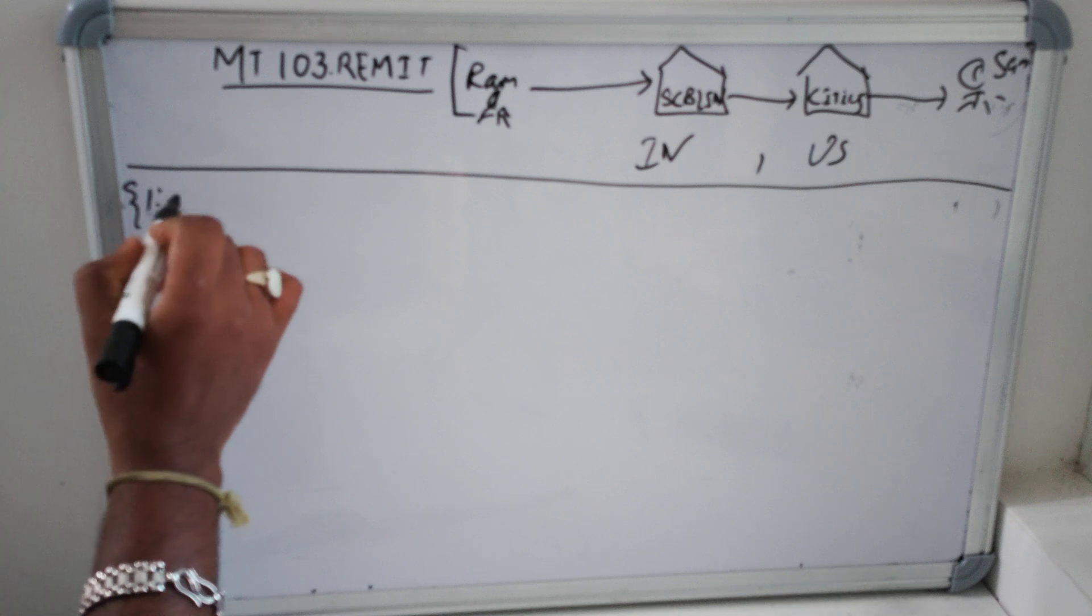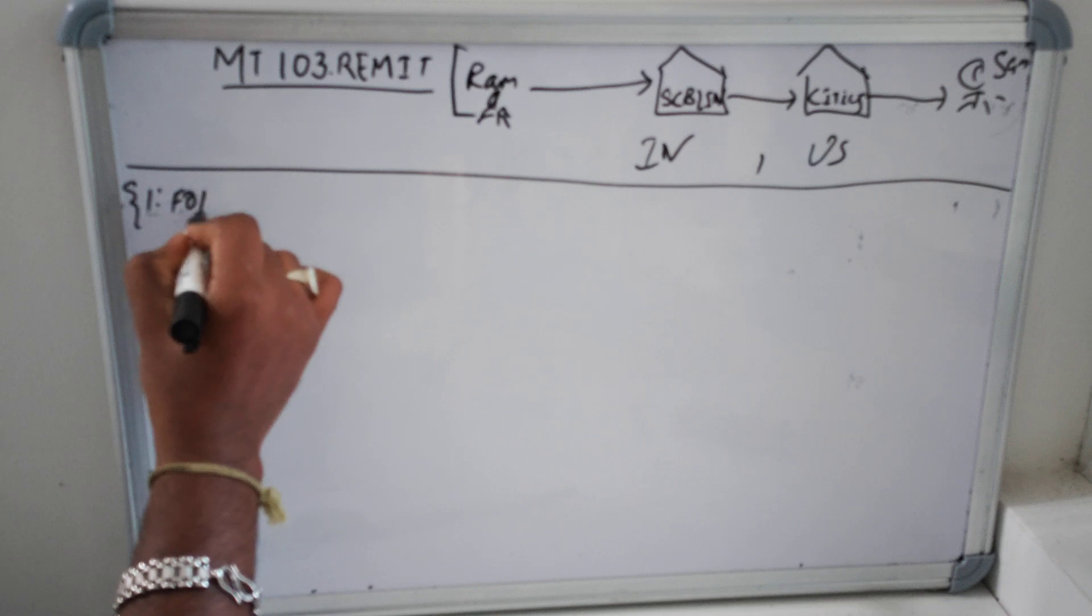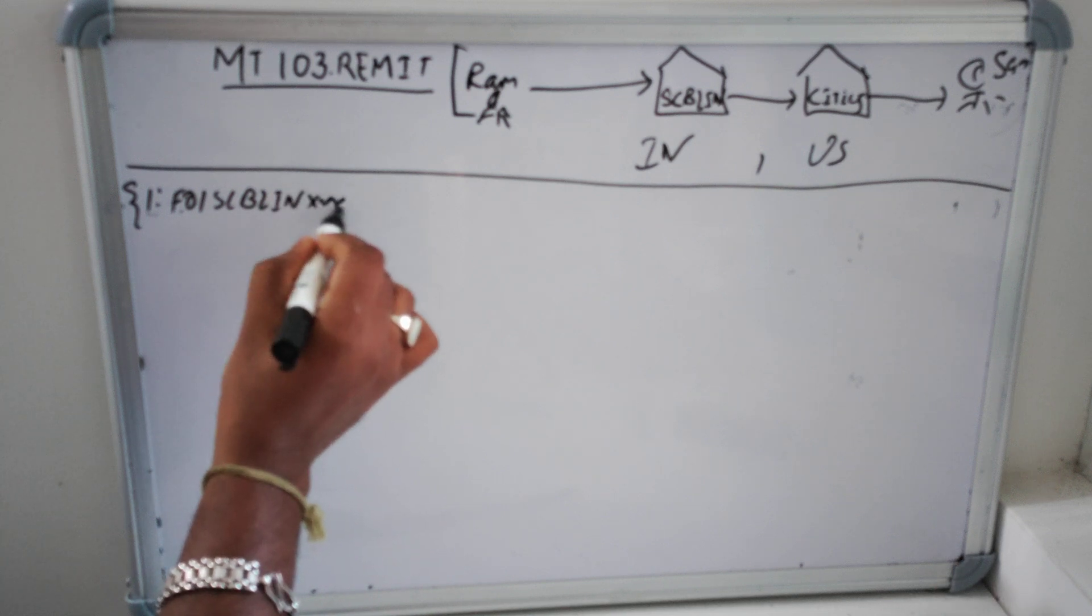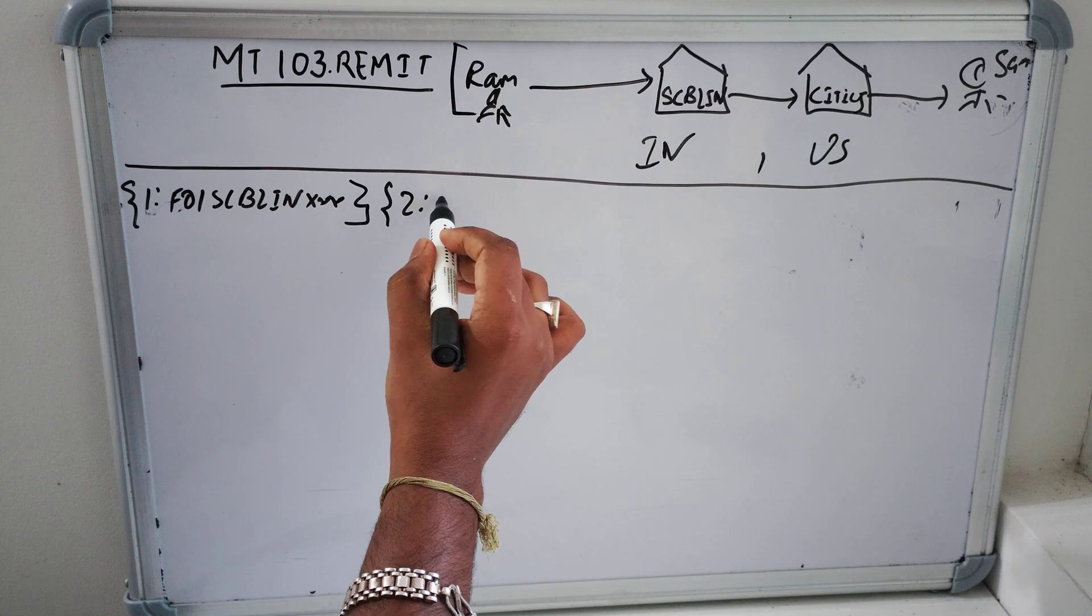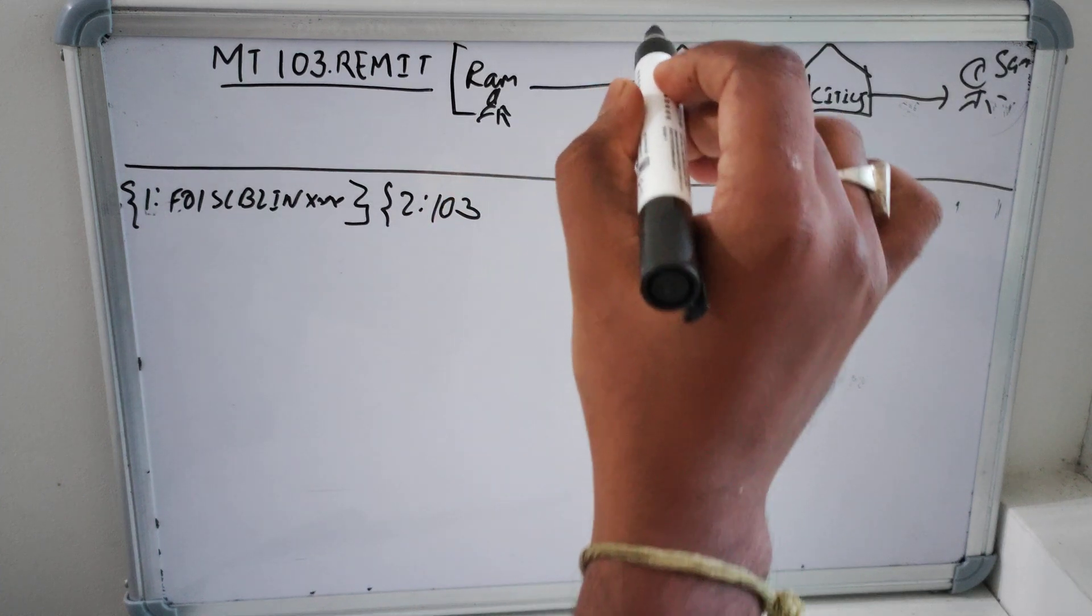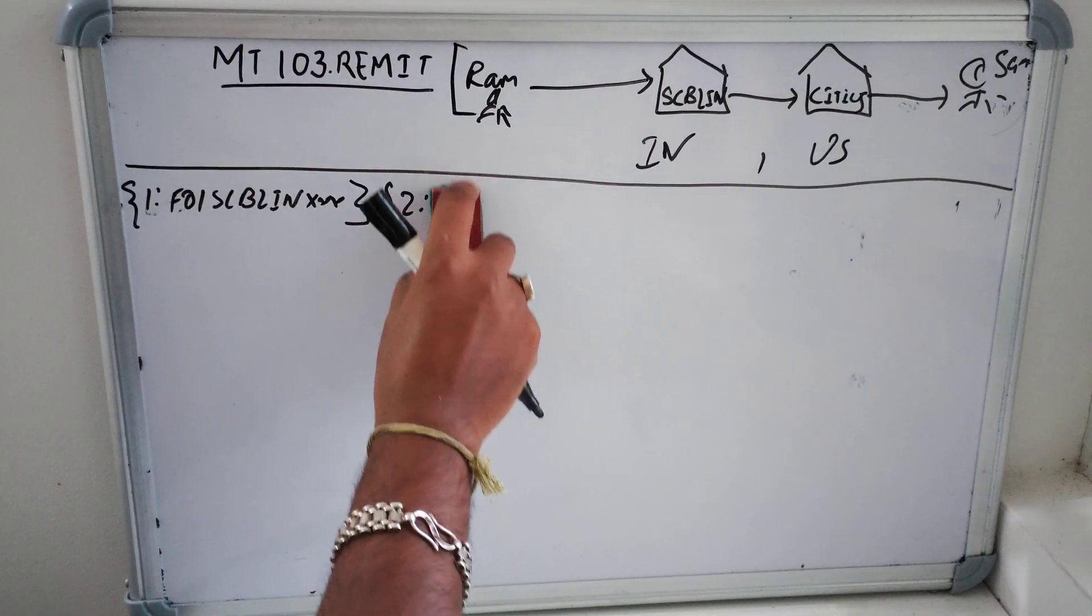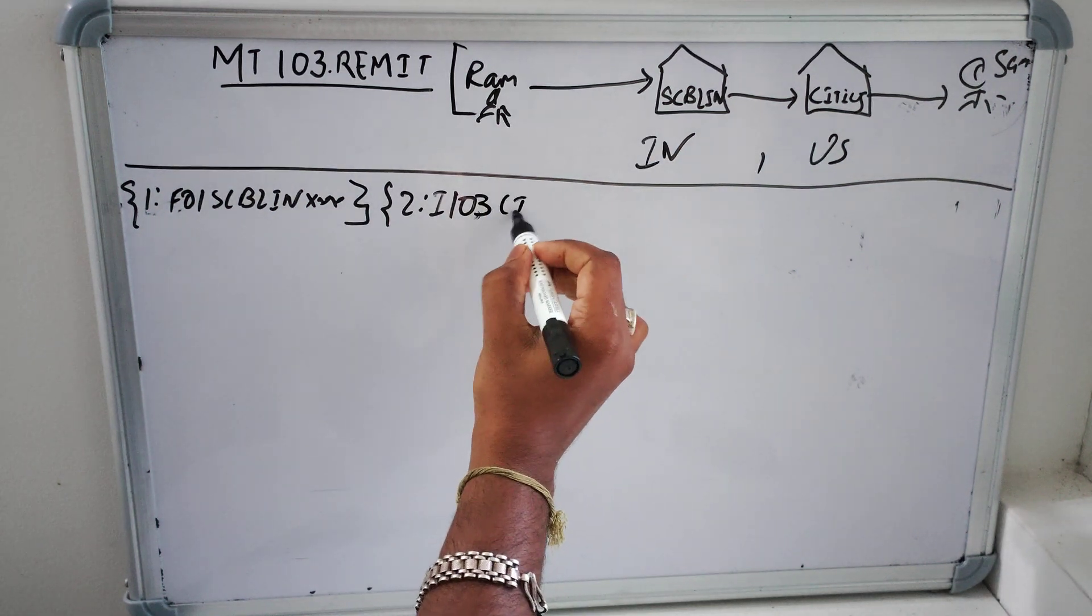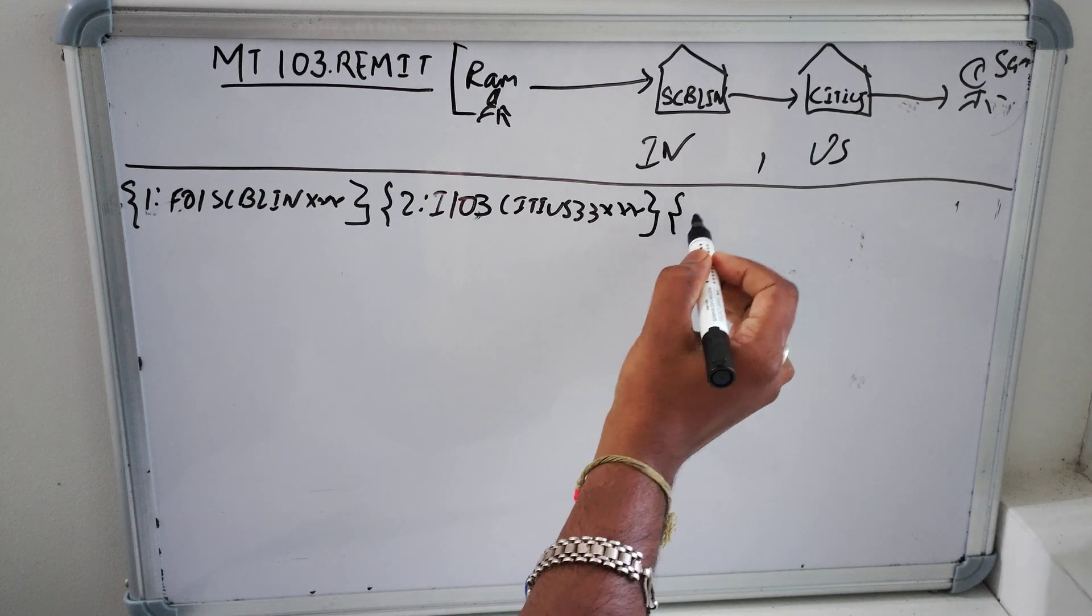Let's start creating the message now. Block one: F01SBLINTRIPLEXXXX. Block two: we are using MT 103 and basically it will be I-103 and then receiver SCTUSTRIPLEXXXX.